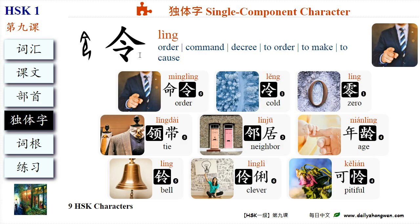令 is a single component character. 令 means order, command, decree; to order, to make, to cause. It can be used as a component to form new characters, and usually represents the pronunciation in phonosemantic compounds.